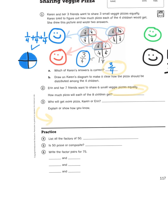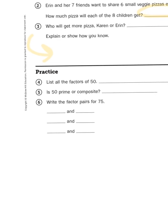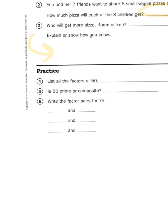Then, finally, let's take a look at these practice problems. These holler back to unit two when we were dealing with factors, prime and composite, factor pairs, and so forth. List all the factors of 50. Is 50 prime or composite? Well, let's start with that second question, number five.